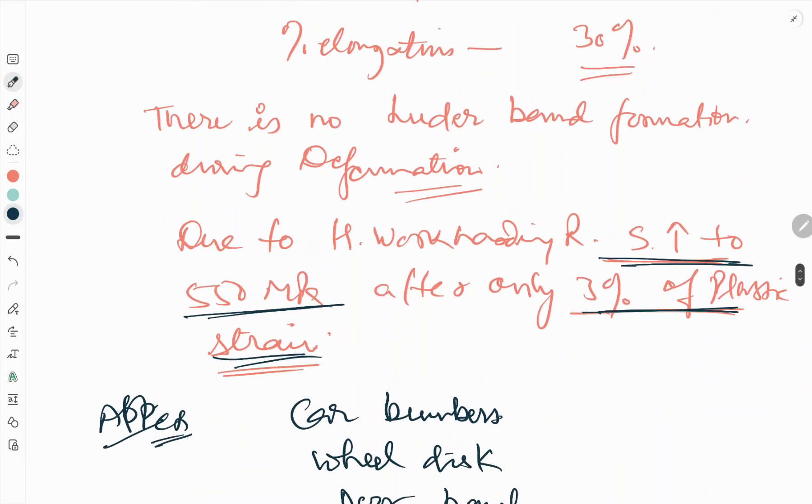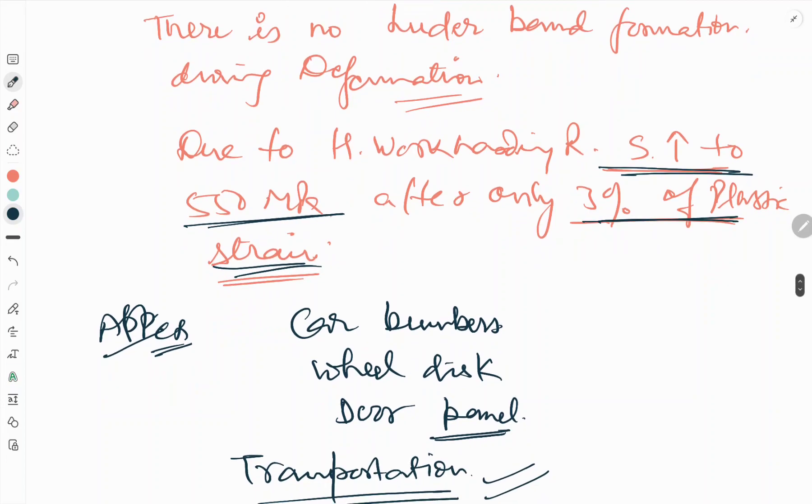The benefits of dual phase steel include applications in vehicles and transportation items in the automobile sector, such as car bumpers, wheel disks, and door panels.